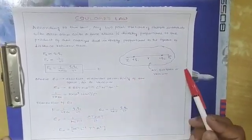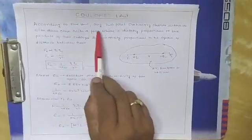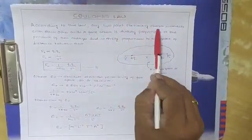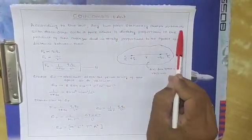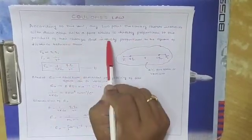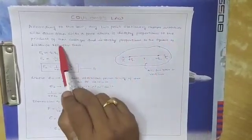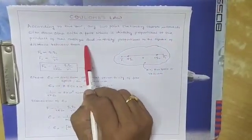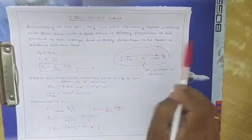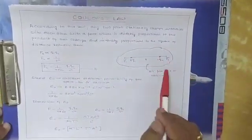To repeat Coulomb's law: any two point stationary charges interact with each other with a force which is directly proportional to the product of their charges and inversely proportional to the square of distance between them.